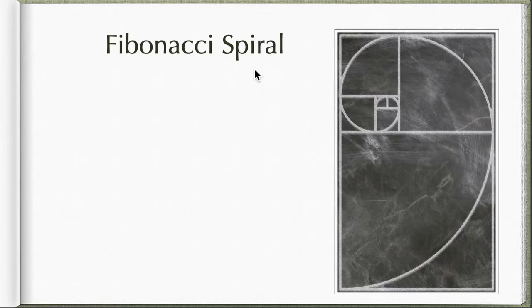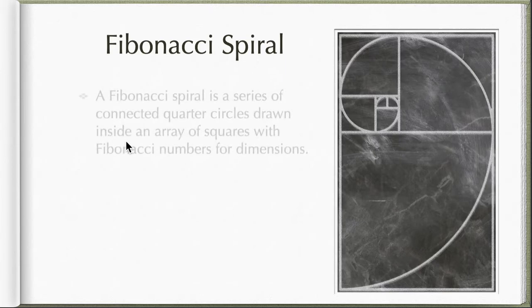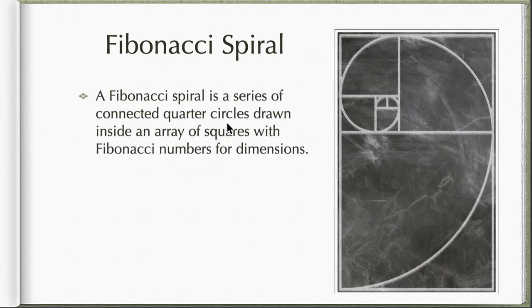The Fibonacci spiral is a series of connected quarter circles drawn inside an array of squares with Fibonacci numbers for dimensions. You can see here the squares I'm going to illustrate in a while. Notice that the quarter circles are arched through these squares here. Take note they are squares, not rectangles - they have equal side lengths and I'm going to illustrate it in a while.